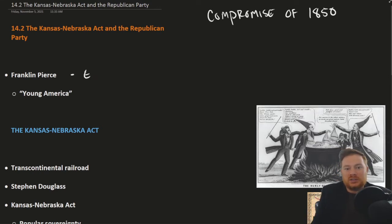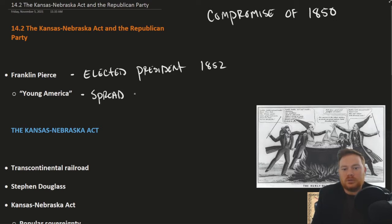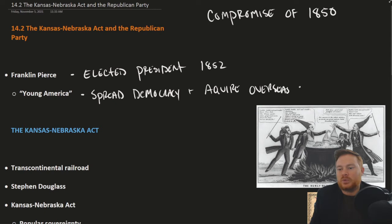Franklin Pierce was elected president in 1852 and didn't really talk too much about the issue of slavery. He talked about the idea of 'Young America,' which was to spread democracy and acquire overseas lands. So the issue of slavery really wasn't at the forefront of political debates after the Compromise of 1850.